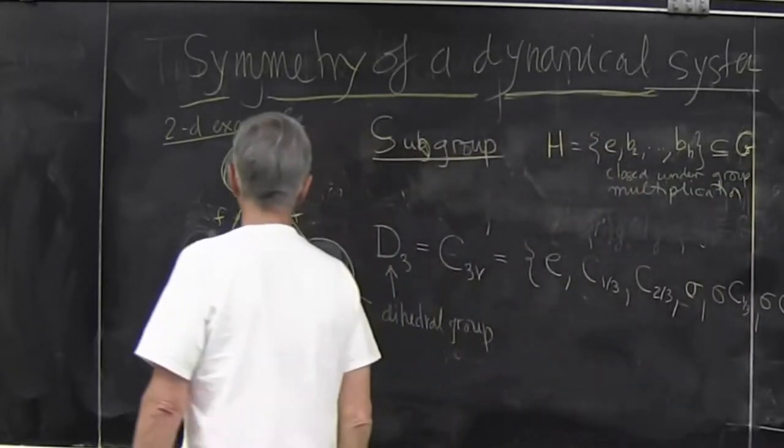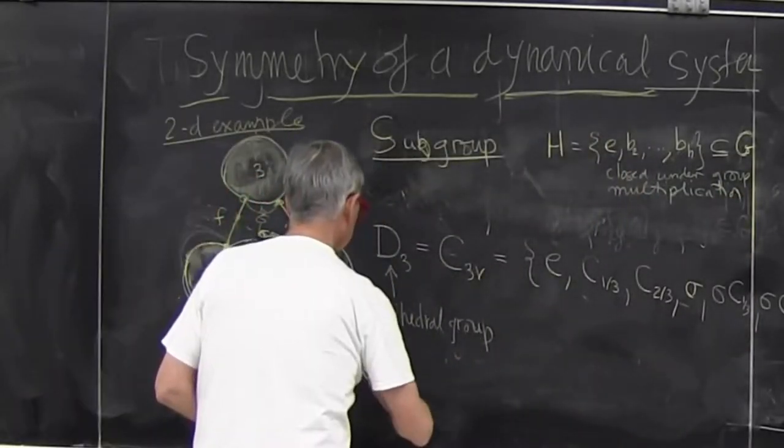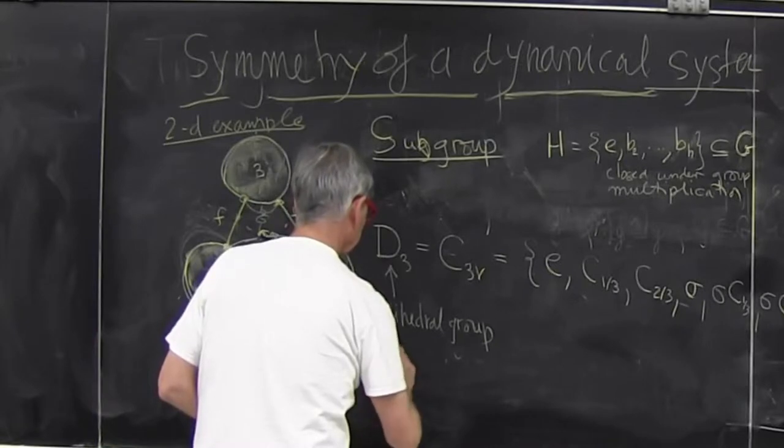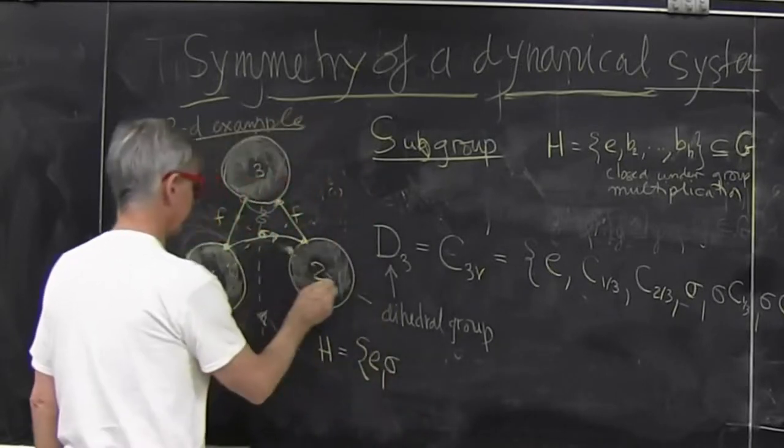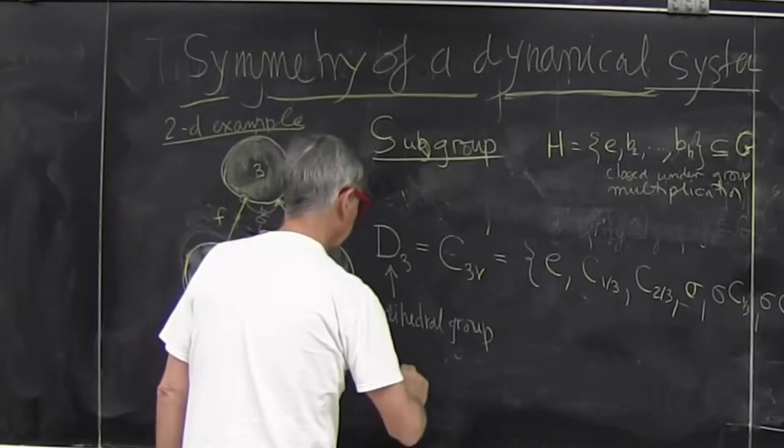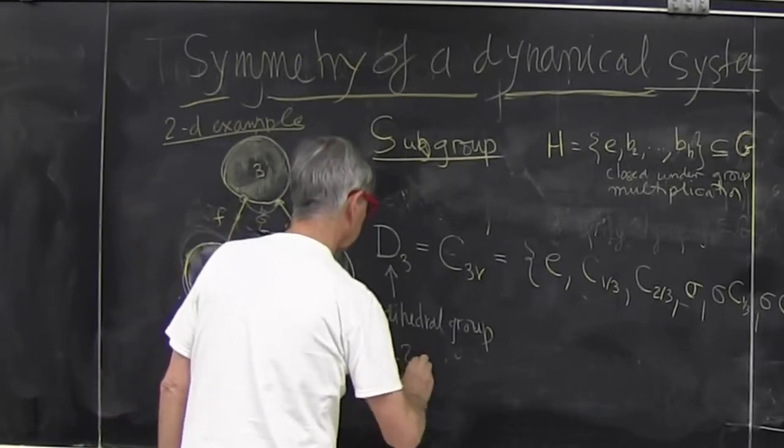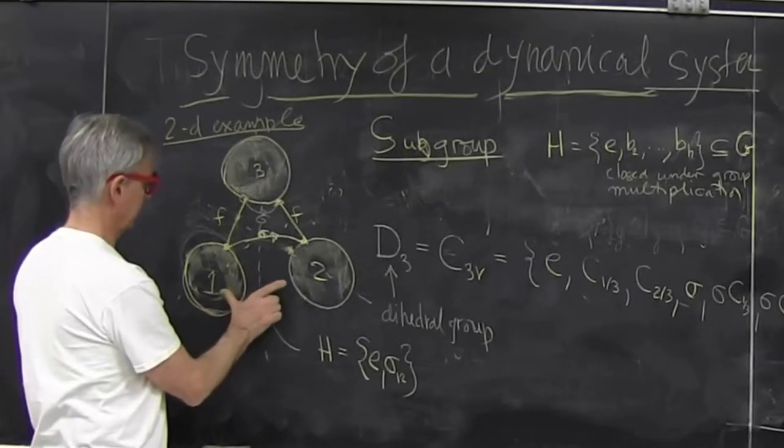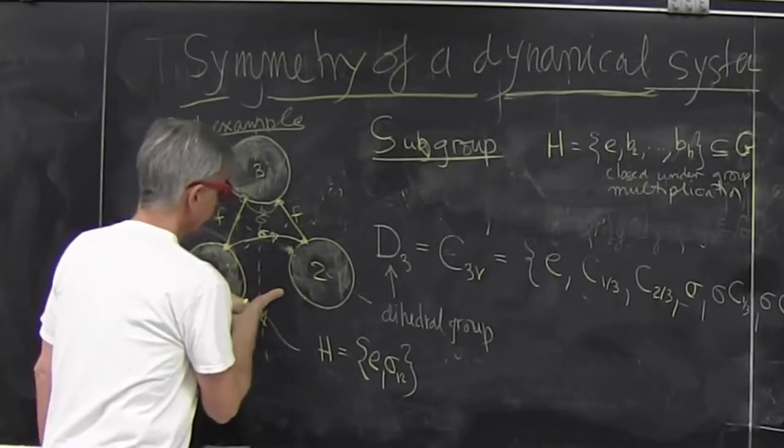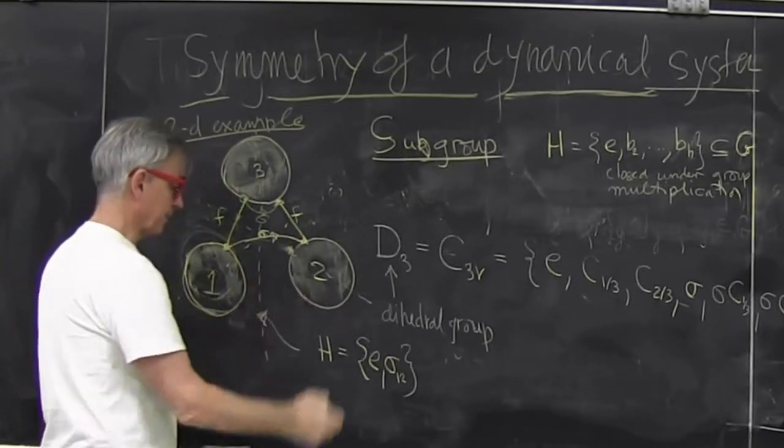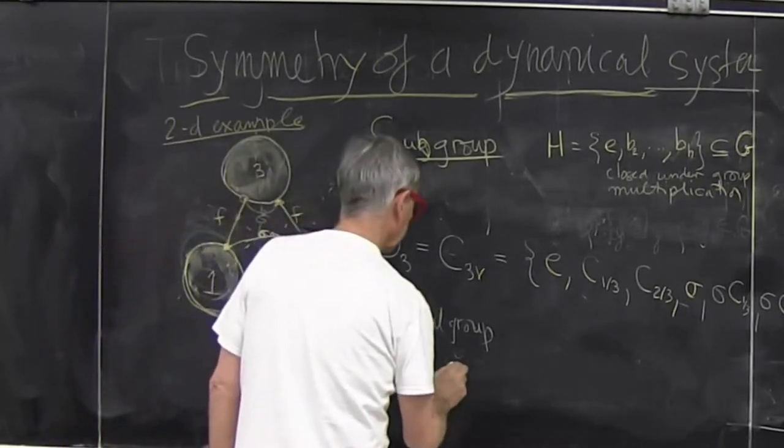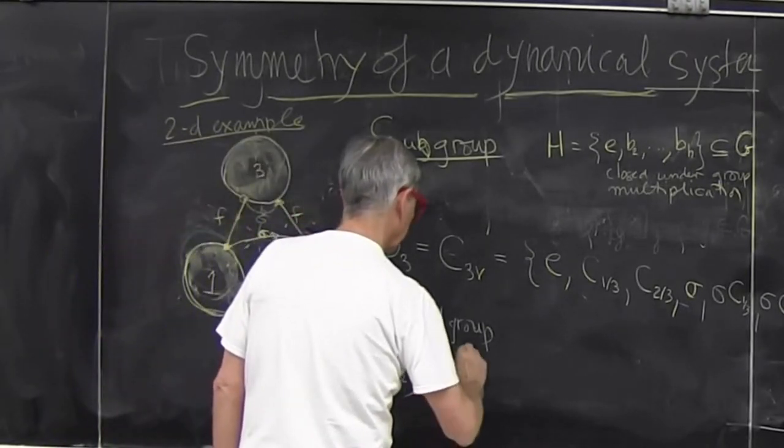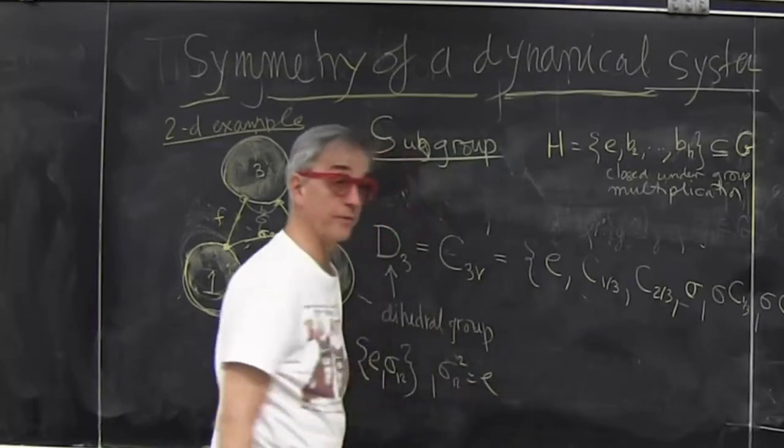So here is an example. Consists of identity and just the symmetry flip. And if you want to be pedantic, it's symmetry flipping one to two. This is obviously a subgroup because I interchange these two disks. I do it twice, I'm back. It has a property that sigma one two squared is identity. It's a group of two elements.